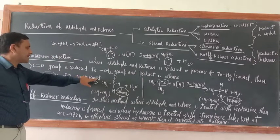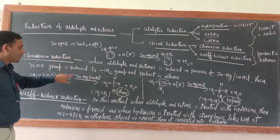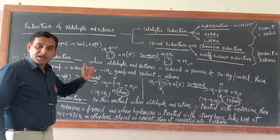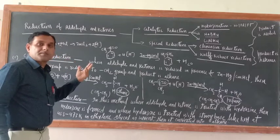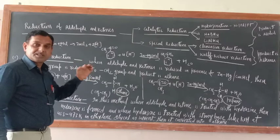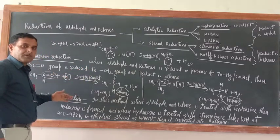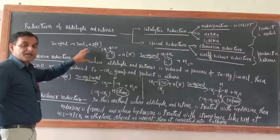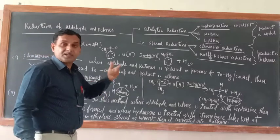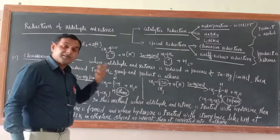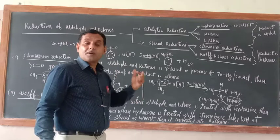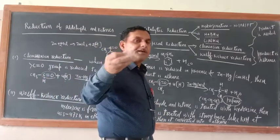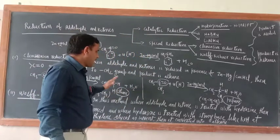Regarding zinc amalgam: amalgam means an alloy containing mercury (Hg). Zinc amalgam means ZnHg. The function of amalgam is to control the high reactivity of zinc — otherwise too much hydrogen gas would evolve, and hydrogen is highly inflammable. Amalgam is formed with reactive metals like sodium, potassium, zinc to control their reactivity by alloying with mercury.